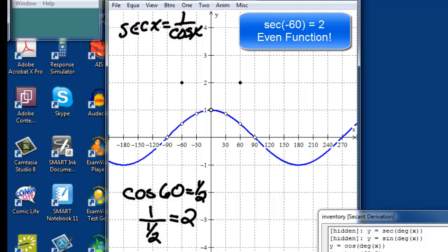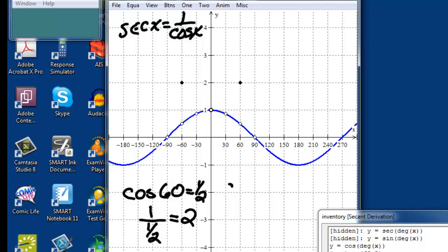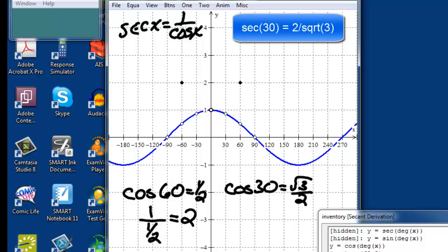At 30 degrees, the cosine has a value of the square root of 3 over 2. And its reciprocal would be 2 over the square root of 3.